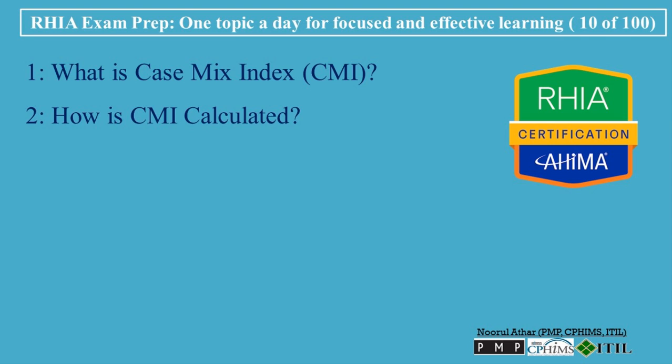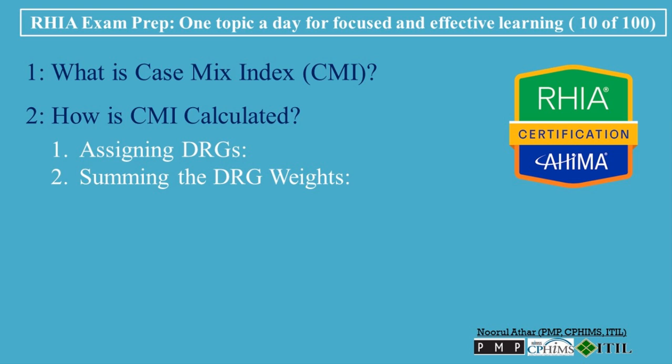Now that we know what CMI is, let's talk about how it's calculated. The CMI is determined by the following steps. First, every inpatient discharge is assigned a DRG based on the patient's primary diagnosis, procedures performed, and other relevant factors. Each DRG has a relative weight assigned by Medicare, reflecting the average resources required for that case. Next, the relative weights of all DRGs for discharges during a specific period are summed up, giving an idea of the total resources used. Finally, the CMI is calculated by dividing the total DRG weight by the total number of discharges. The formula is: CMI = sum of DRG weights / total number of discharges. This gives us the average DRG weight, which is the CMI.